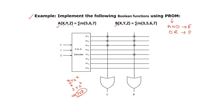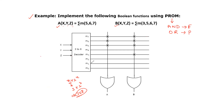Suppose if the boolean function has 4 inputs, then the decoder size should be 4 by 2^4, which gives 4 by 16. In this problem, we only have 3 input variables, so the decoder size is 3 by 8. From this 3 by 8 decoder, the number of outputs or minterm numbers should be M0 to M7. Based on the number of boolean functions, we have to select the number of OR gates. Here we have only 2 boolean functions, so we have to use 2 OR gates.